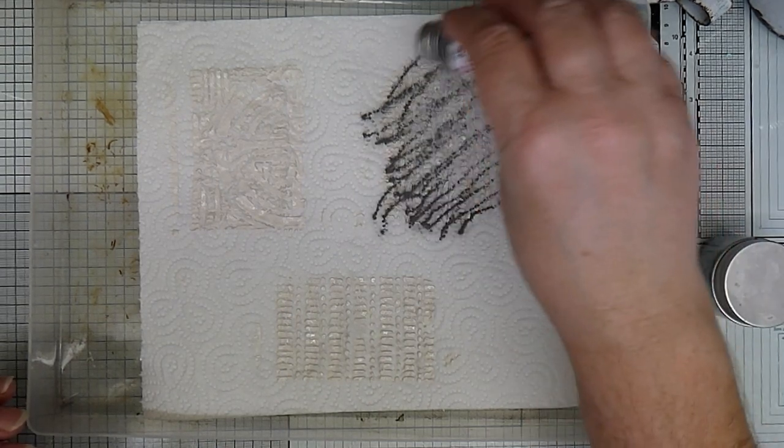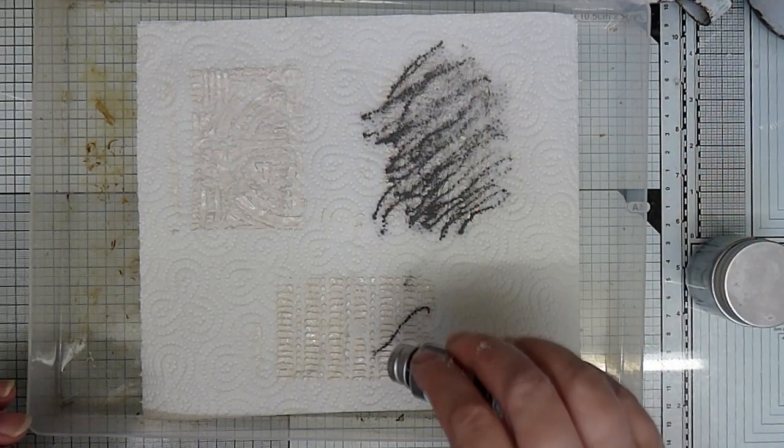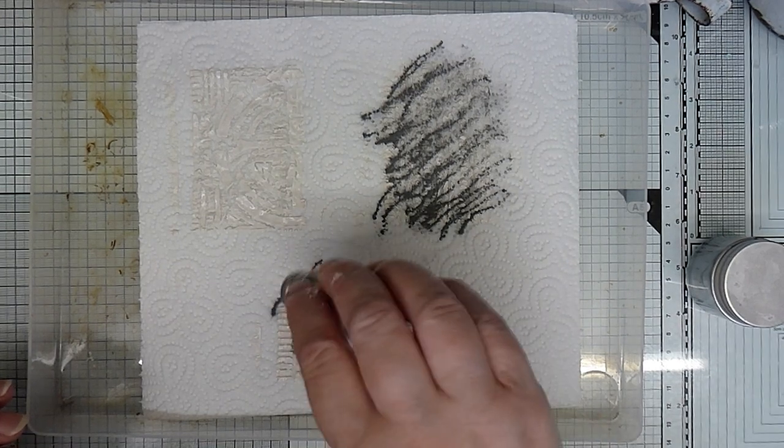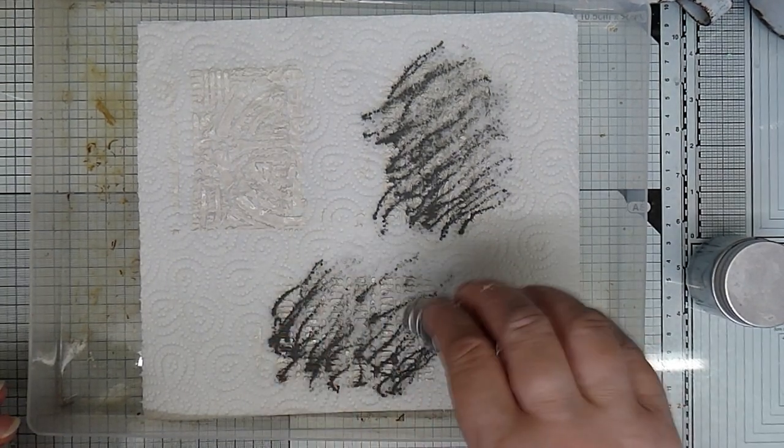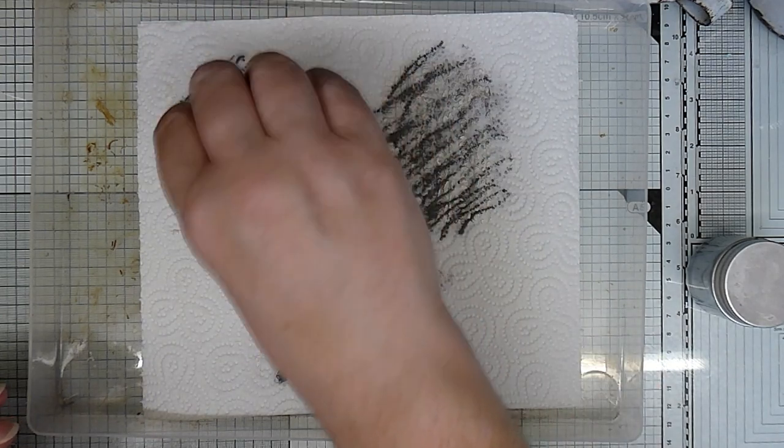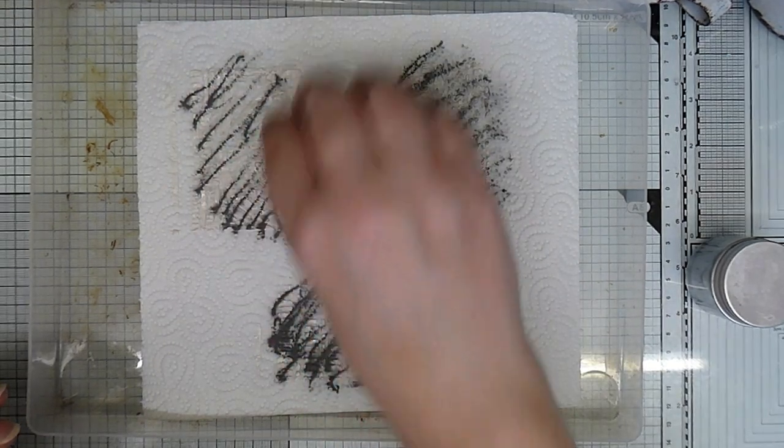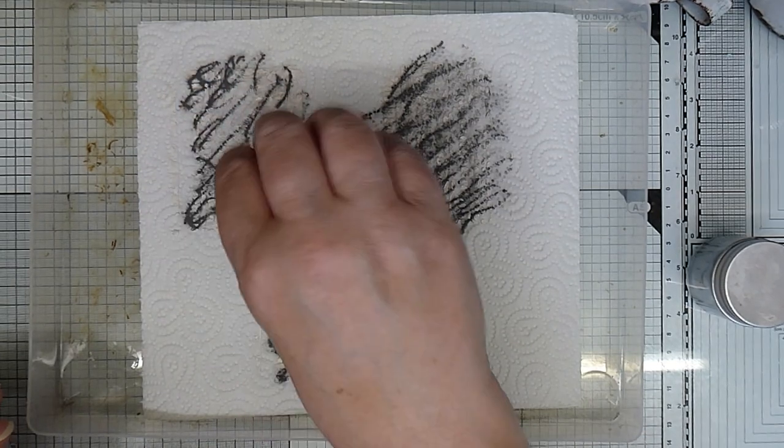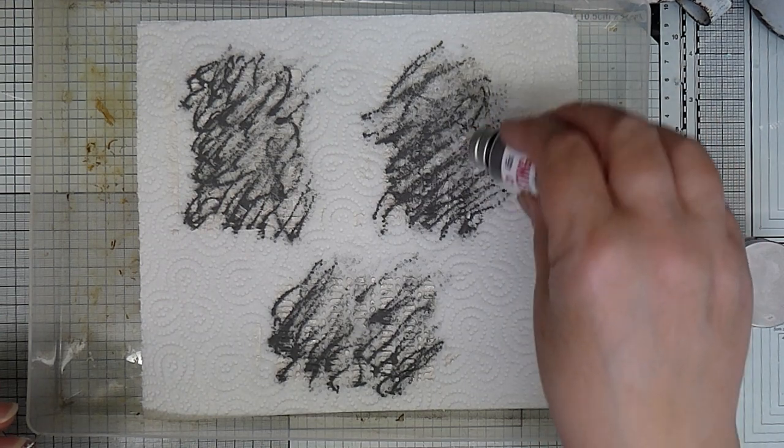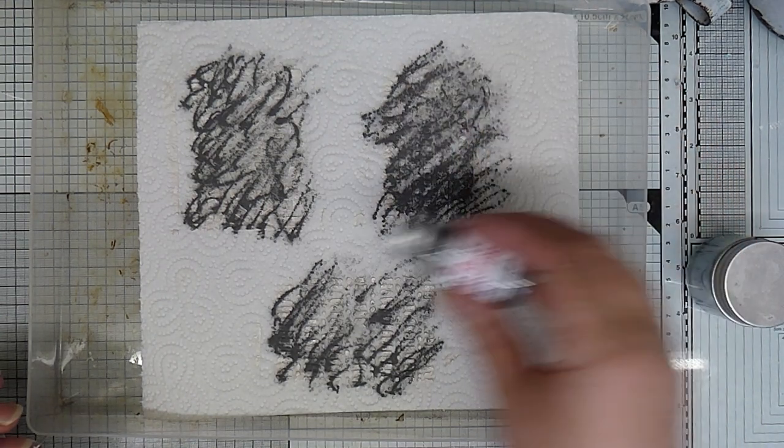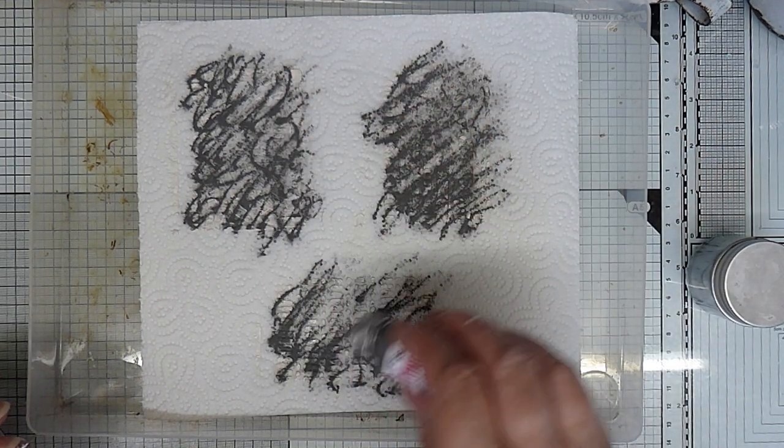And it does, because I've just put one hole in the lid, it doesn't come out as a stream. But don't worry about that because we're going to move it. That's why you need reasonably strong kitchen roll. So that you're able to move it without the kitchen roll ripping or coming apart.